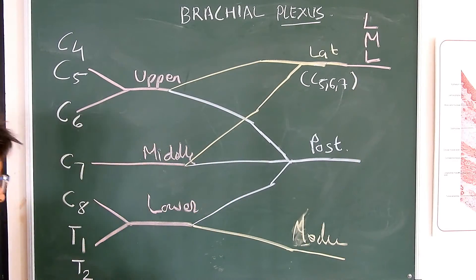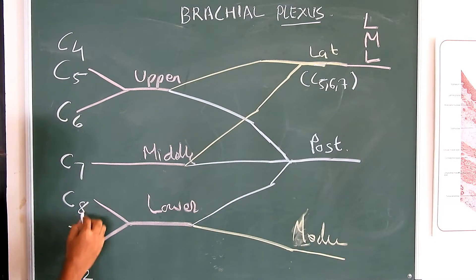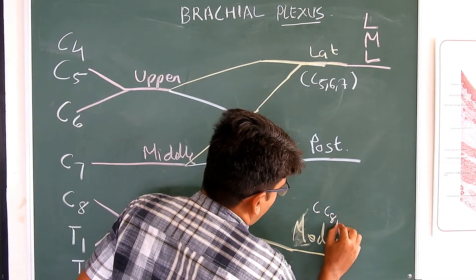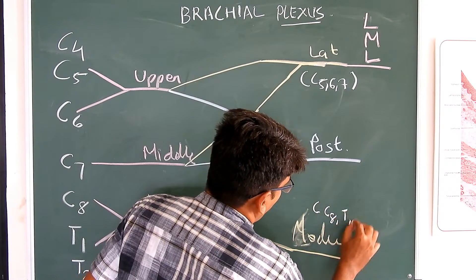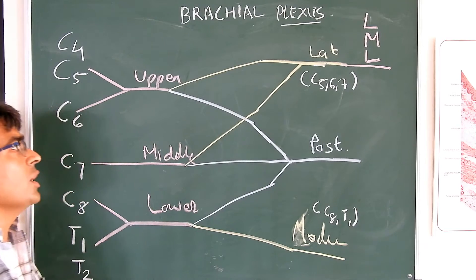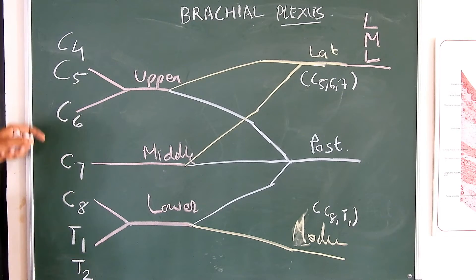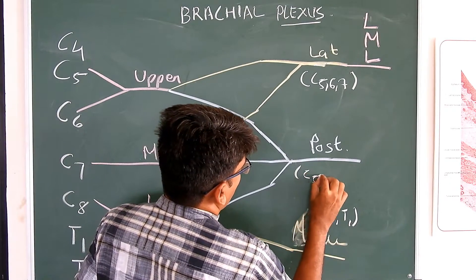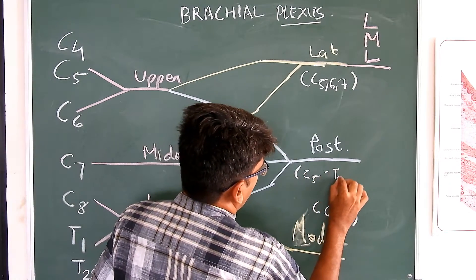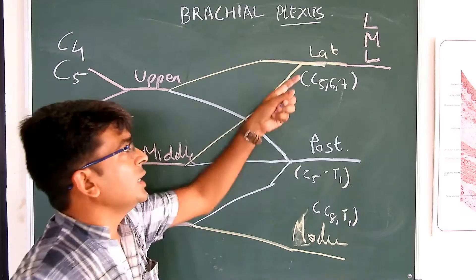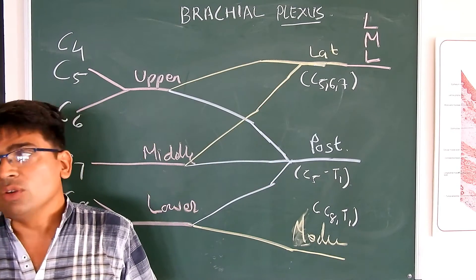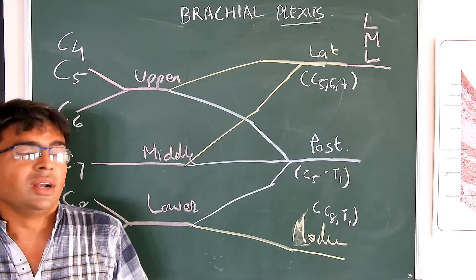The medial cord is formed by C8 and T1, so the medial cord root value is C8 to T1. The posterior cord is formed by all the roots, so its root value is C5 to T1. This is important to remember when recalling the root values of the different nerves.